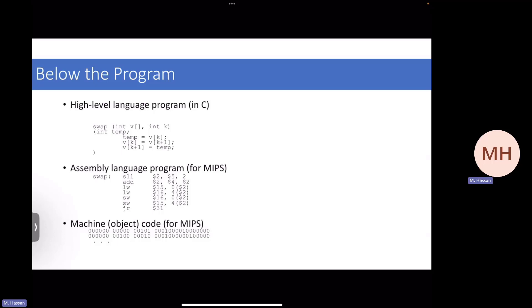If you look at a very high-level C program, here for example I'm doing a swap function. I provide two inputs — I want to swap two elements of an array, V[k] and V[k+1]. So the input is the actual array and the pointer indicating which elements to swap. Once I get that input, the program executes the swap and gives me the output after the swap. Someone programmed that program — as a user I have the binary, but someone developed the software for that binary.